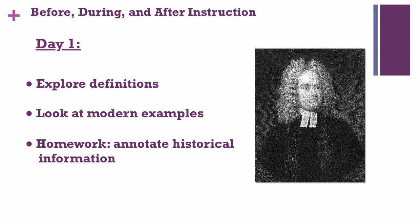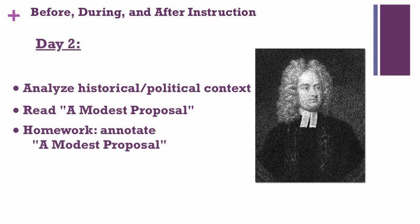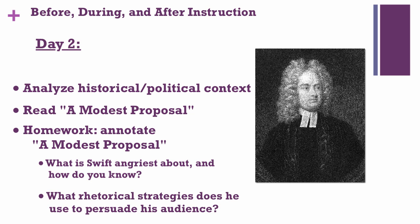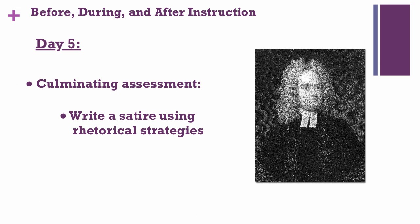When you think about the differences between the IRE and IC examples you just heard, you may have noted that the IC example happened in a greater context — a before, during, and after model of instruction. Note that students were in day two of a unit that began with a definition of and modern examples of satire, and where the students had already annotated historical information about the political context for Swift's satire and his biography as preparation for reading A Modest Proposal. On this particular day, students were analyzing the historical context for Swift's satire before reading A Modest Proposal. You can assume that students will read and annotate some of the essay in answer to these questions: what is Swift angriest about and how do you know, and what rhetorical strategies does he use to persuade his audience? The students will then conclude this unit by writing a satire of their own, using rhetorical strategies of hyperbole, incongruity, and irony.